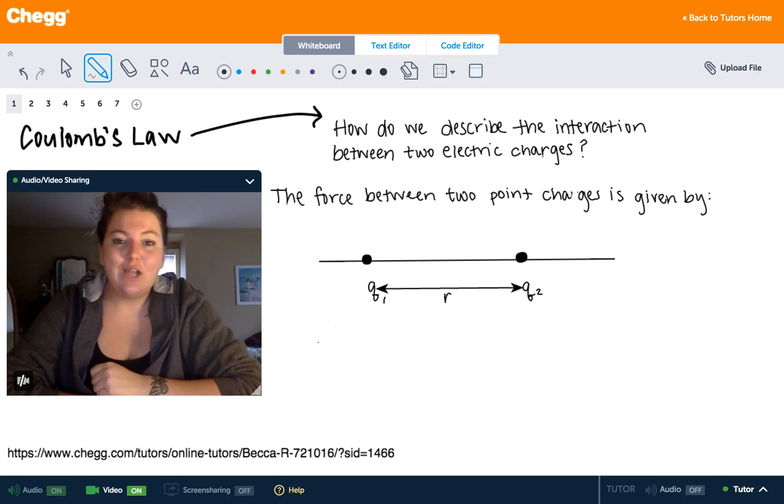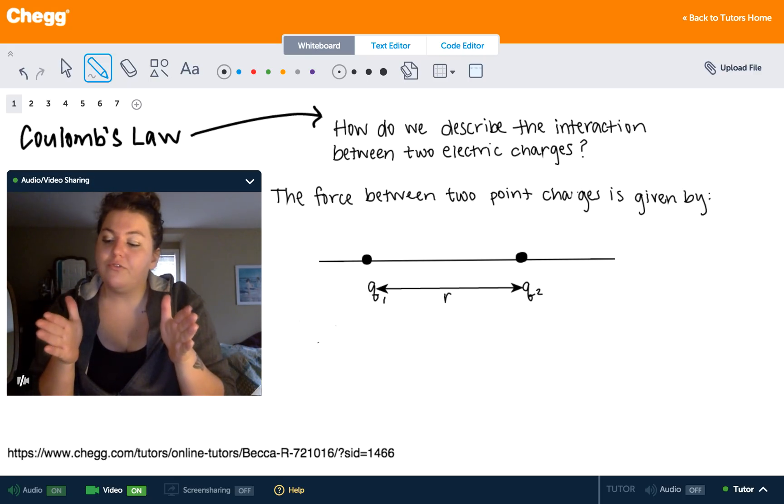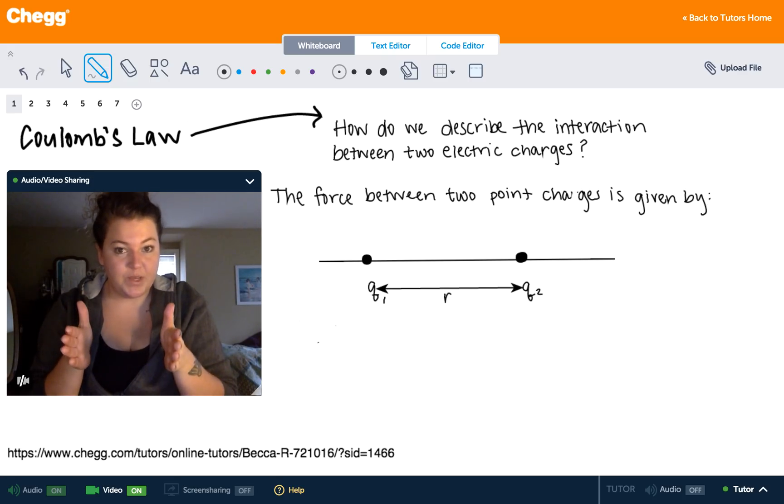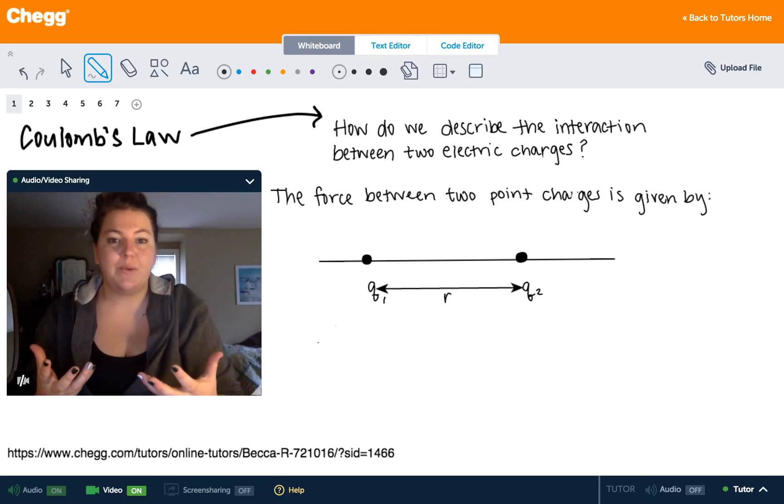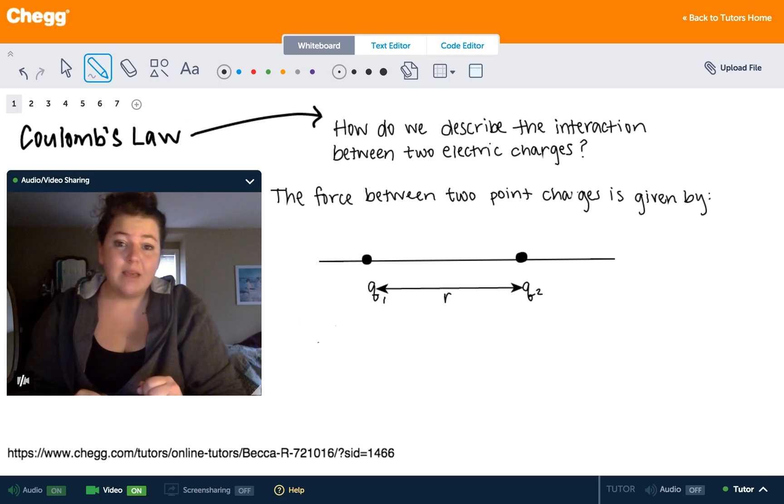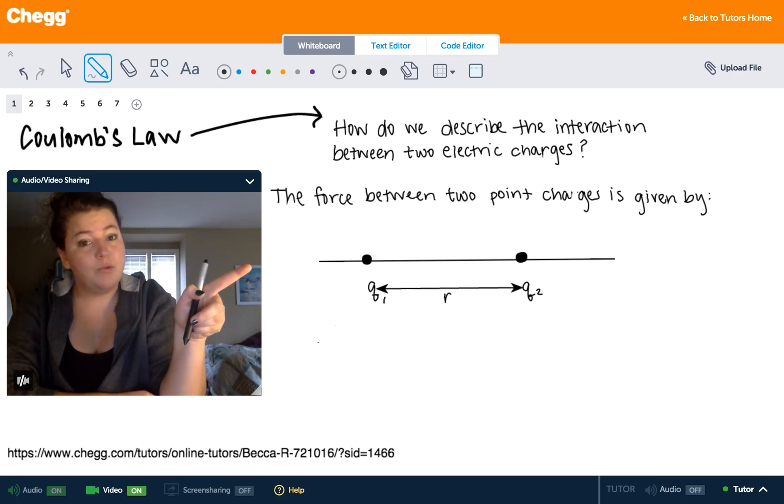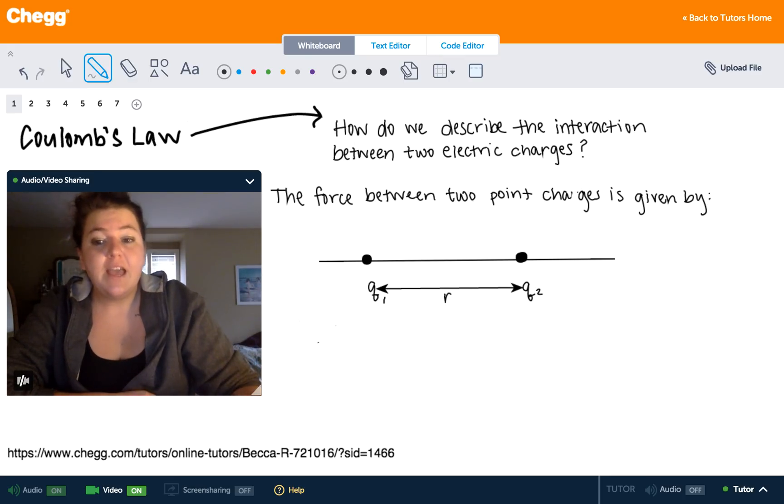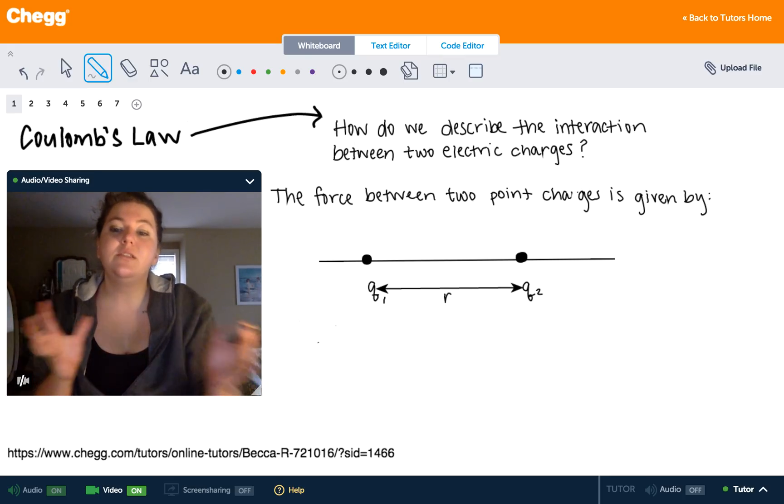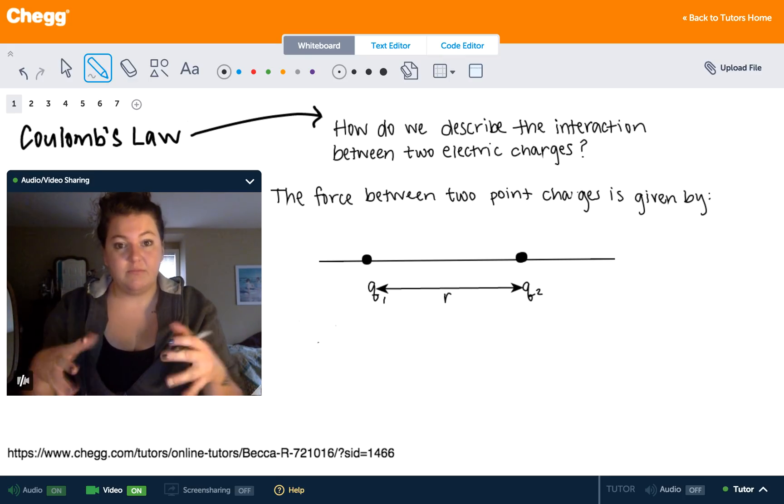So back in the 1700s people noticed that materials that had an electric charge applied to them exerted a force, some sort of interaction between themselves, but there wasn't really a good way to quantify what that force was. So a French physicist by the name of Coulomb came up with a way to quantify that interaction between two charges and what he did is he considered two point charges on a line and considered what the force, the electric force between them depends on.